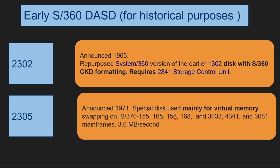The S370 models — the 155, 165, 158, 168 — were announced without dynamic address translation initially. Then came the famous 3033, the 4341s which were smaller mini mainframes for VM and VSE use, and the 3081 which I worked on in the early to mid 1980s. These could use the 2305 as a swapping device to support more users with limited memory.